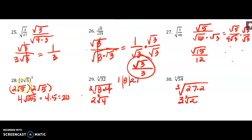Number 28: remember squaring something just means you're multiplying it by itself, so I just wrote that out and then combined those like terms. I multiply my coefficients: 2 times 2 is 4. The square root of 5 times the square root of 5 is 25, which is 5, and then 4 times 5 is 20, so 20 is my final answer.